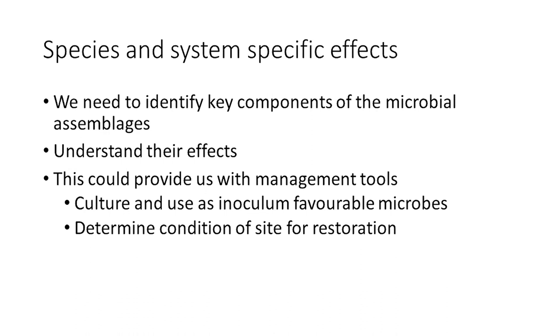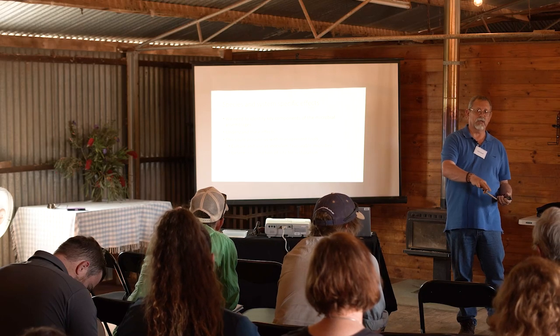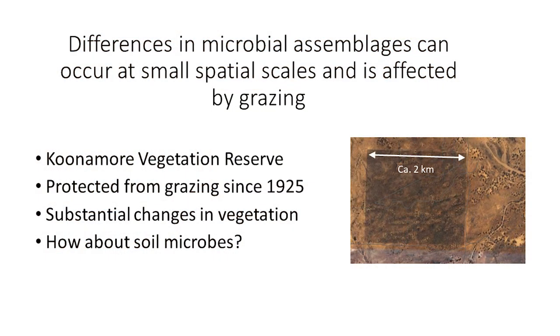We are not quite at the point of managing systems with this, because the species and systems show specific effects. So we need to identify key components of the species assemblages and understand the effects of different components on native grasses and invasive species. And eventually — I could see this happening in 10 to 15 years — this could provide management tools. We could develop cultures of microbes that favor the establishment of native grasses. But also, we could use this information to determine the condition of a specific site for restoration. Perhaps in 10 years' time, we could run a DNA analysis of the microbes in the soil and say: in this site we have lots of these microbes that have a very strong negative effect on native species, so we have to do something about that.